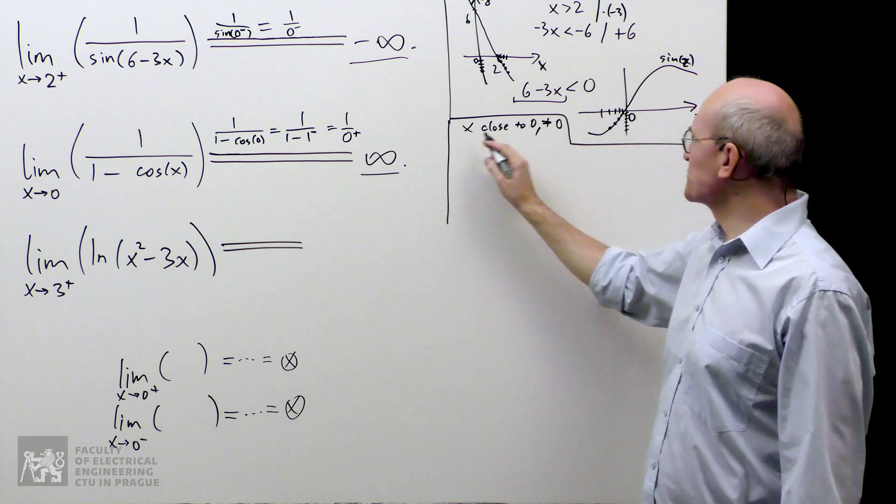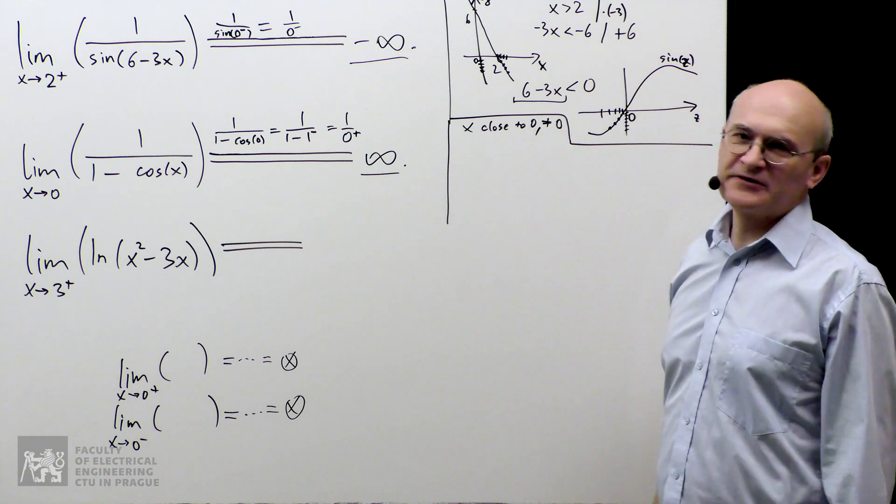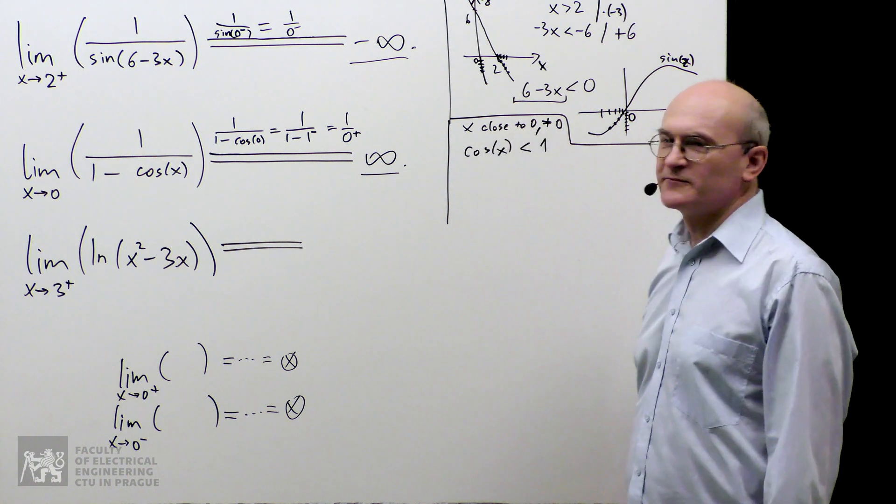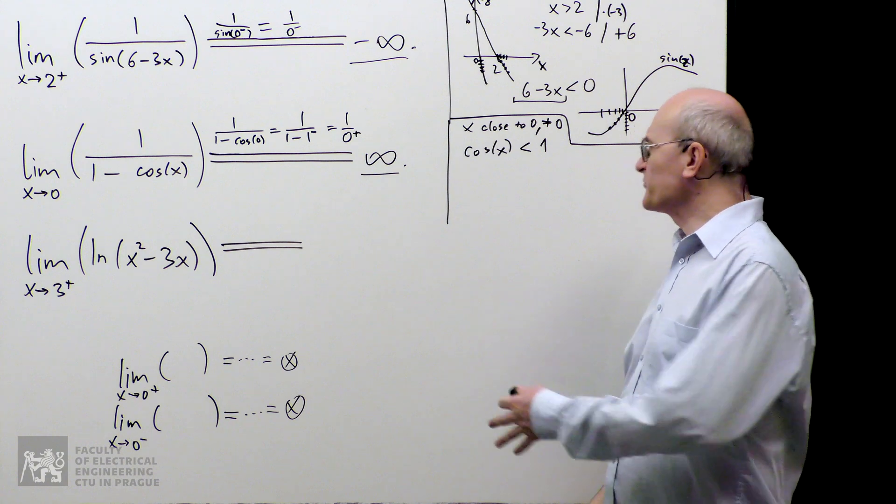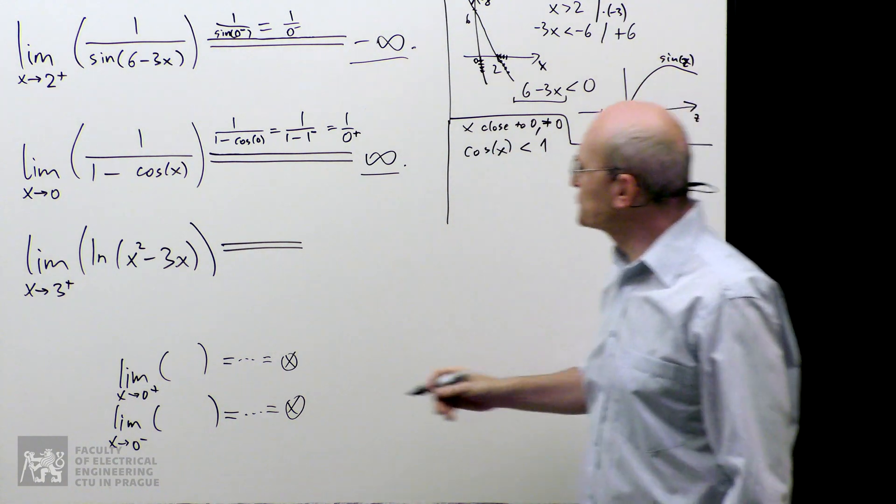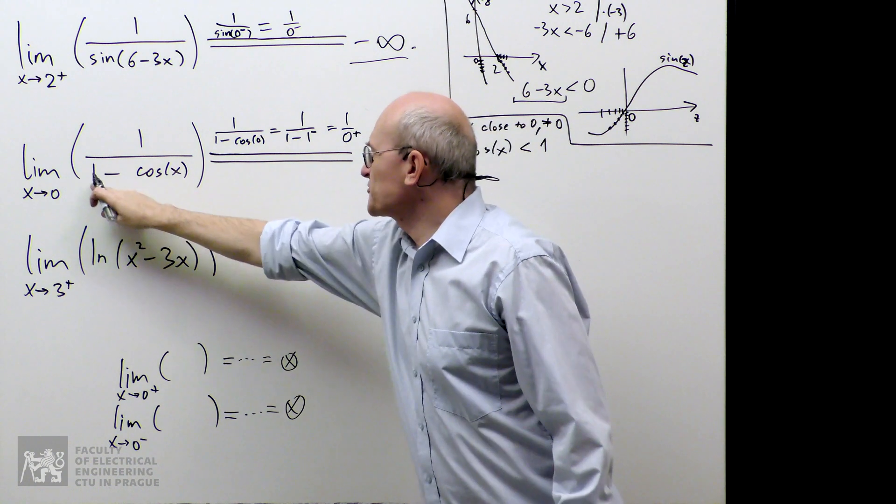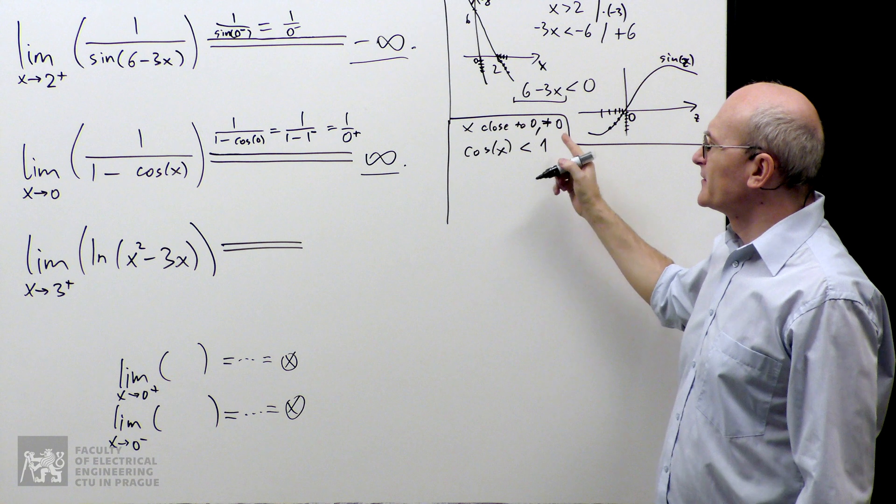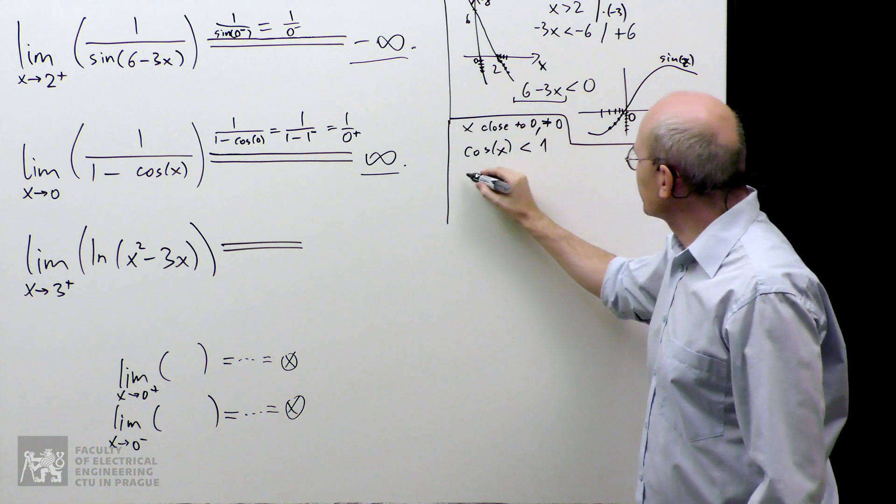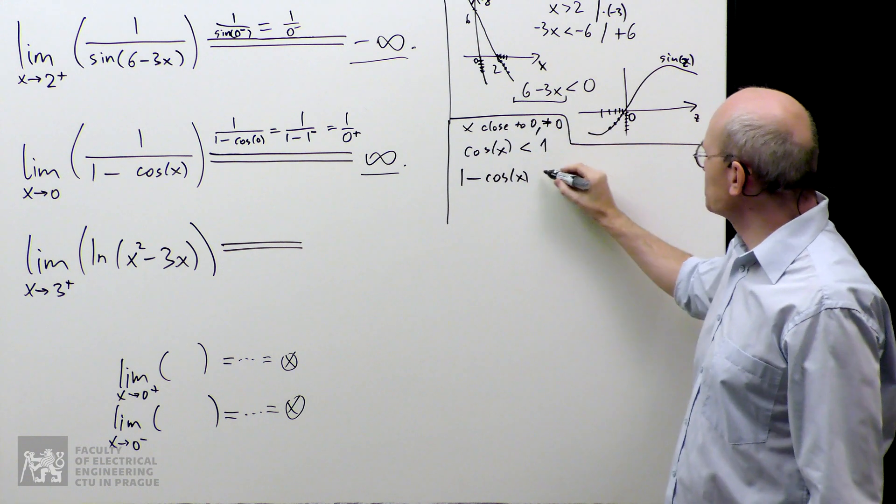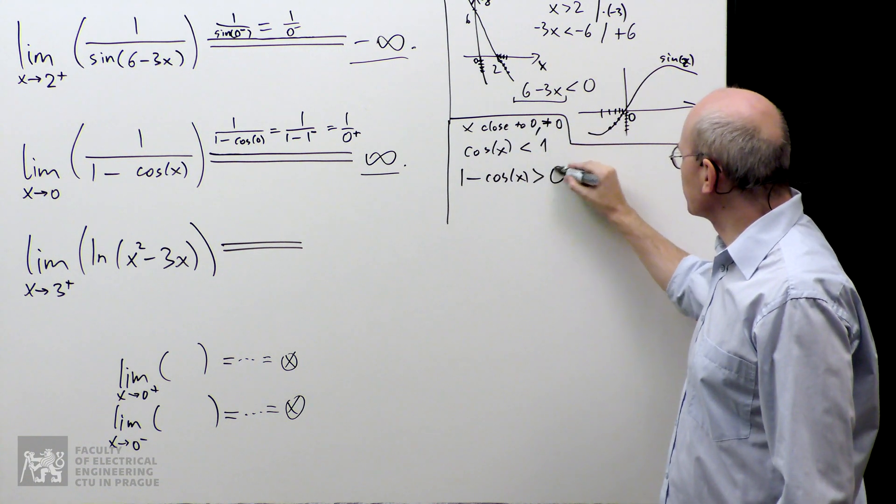So, I have a number which is close to 0, but not 0. And then cosine of x must be strictly less than 1. And now I play with this inequality in a similar way that I did over here to rearrange it, to obtain information about this expression. So, I multiply this by negative 1 and so on. I play with it and I get that 1 minus cosine of x.